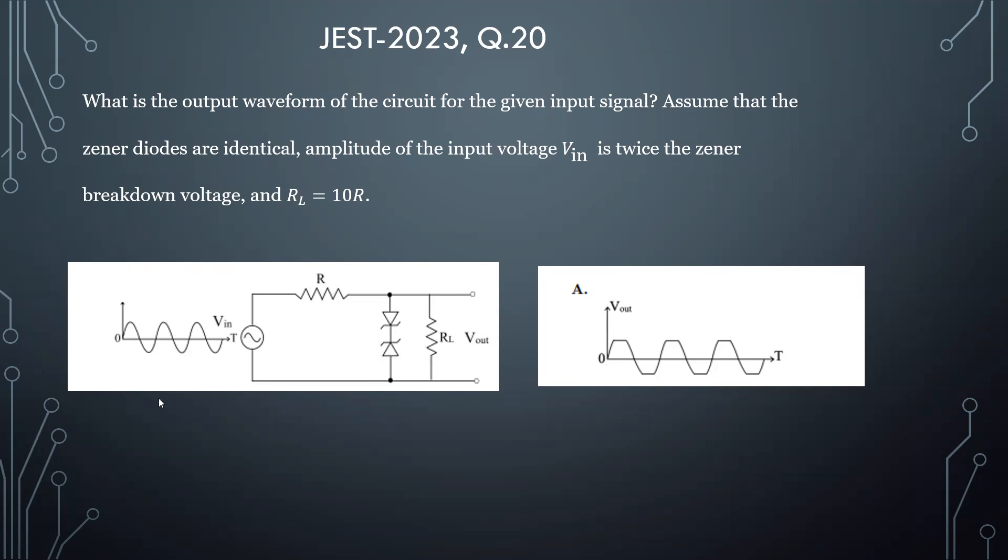Let us see what happens when you apply positive input, positive cycle. When this positive cycle amplitude is less than the zener breakdown voltage, then this path will not conduct. This diode one will be forward biased, so it will not require any voltage and will become a short circuit.